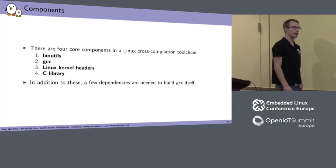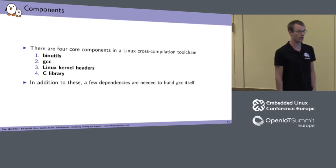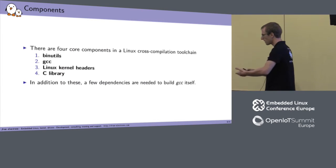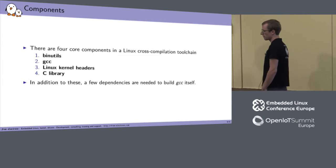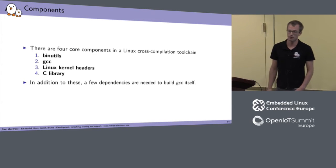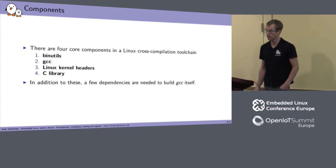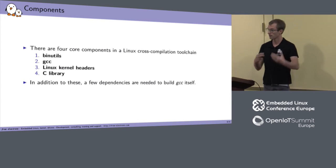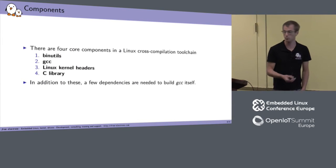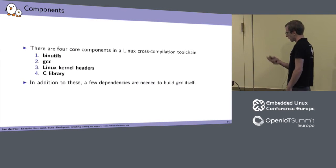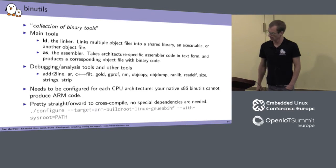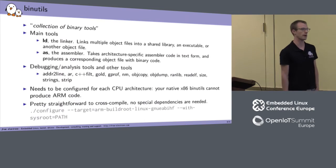A cross compilation toolchain essentially has four main components: Binutils, GCC, the Linux kernel headers, and the C library. That's pretty much all you need to build a toolchain from scratch. A few dependencies are needed to build GCC, which I'll cover as well, but they are relatively easy libraries to build and use.